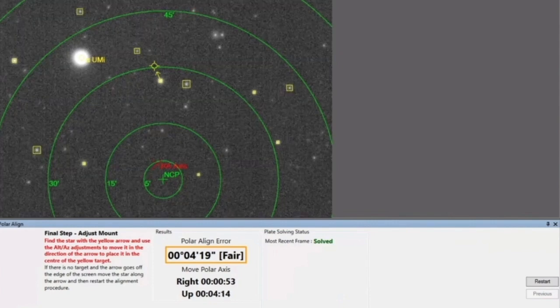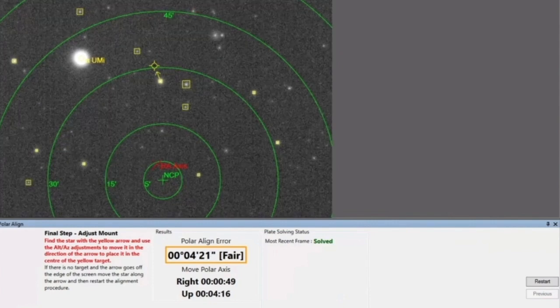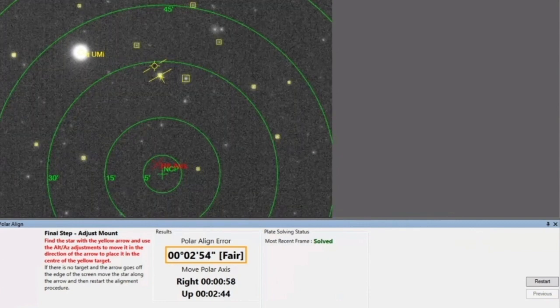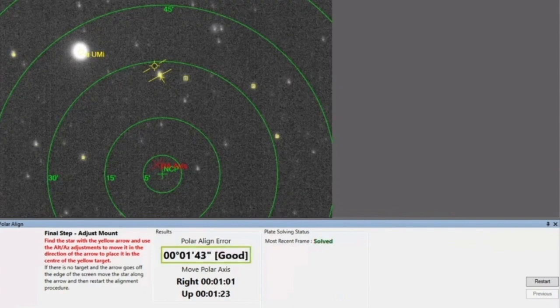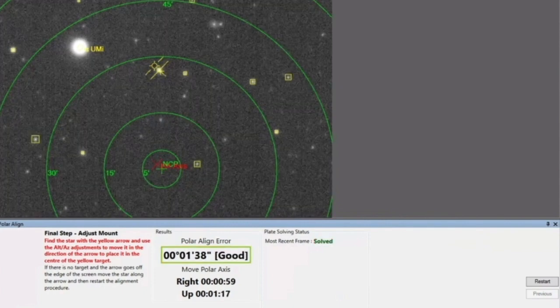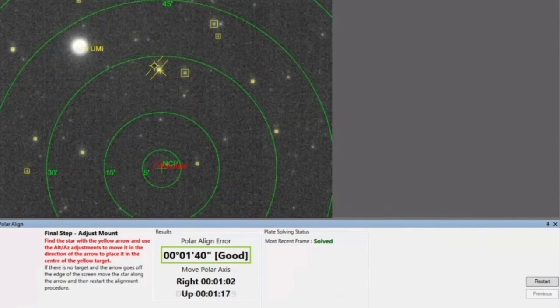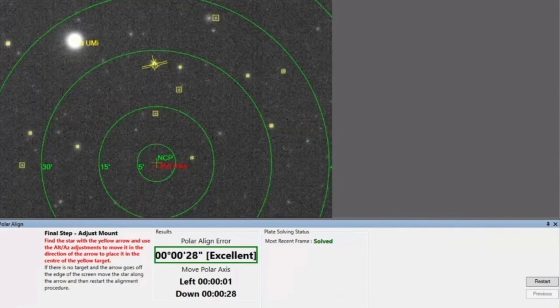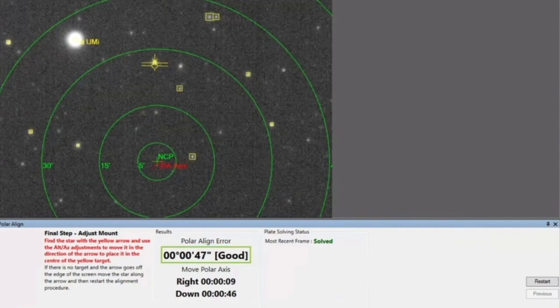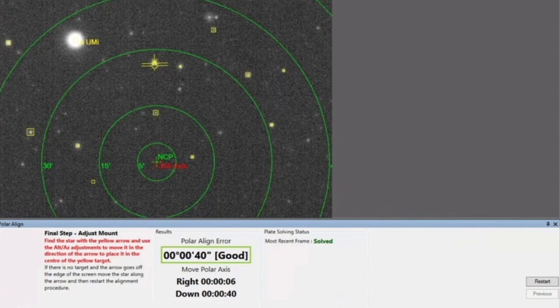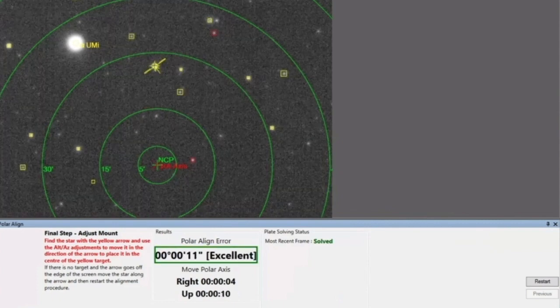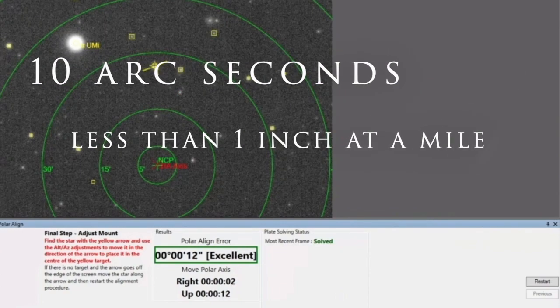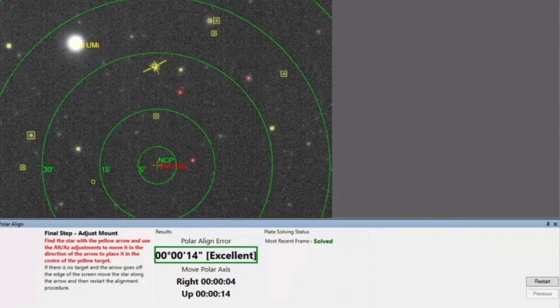I'm trying to get that star in the box and I'm following the directions. It says I need to go right 49 seconds and up 4 minutes. Now we're getting smaller, getting closer. Getting very close. Now one of the keys to doing this is when you see excellent stop because if you don't you're gonna start chasing around little atmospheric shimmers but we're within about 10 arc seconds of the pole right now. That's good enough.